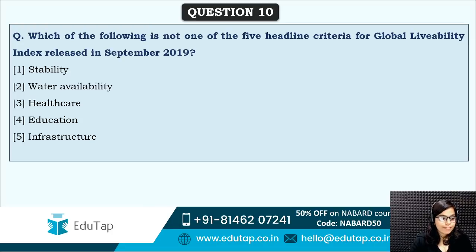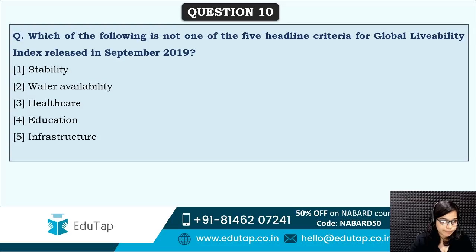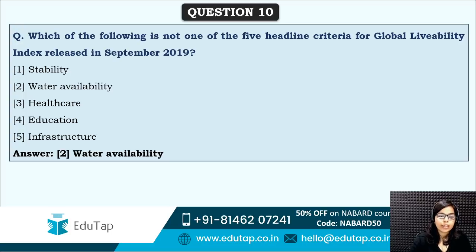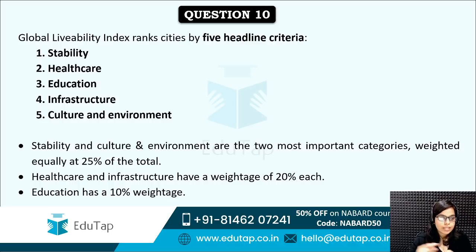Next: which of the following is NOT one of the five headline criteria for the Global Livability Index? Parameters and criteria are important because these types of questions are generally asked in exams, especially for indices. The correct answer is option 2 — water availability is not one of the five headline criteria. The five headline criteria are: stability, healthcare, education, infrastructure, and culture and environment. You need to remember these five parameters.